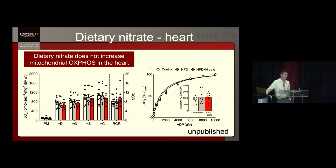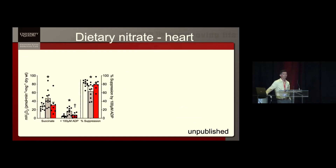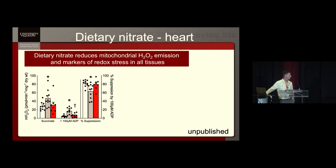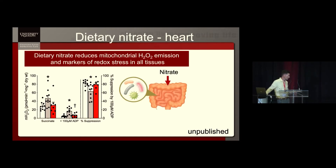Similar to the muscle, liver, and adipose tissue, nitrate did not affect respiration, but it did prevent the typical increase we see in redox imbalance. This is succinate-induced hydrogen peroxide that's attenuated with or without ADP when animals are consuming nitrate. So it seems like this is a very conserved response between tissues.